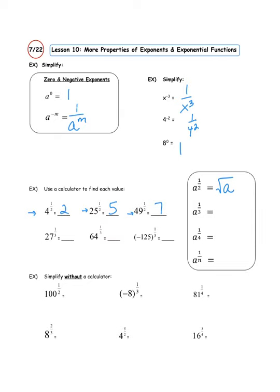What about a one-third power? Let's try those. If you haven't already done so, hit the pause button and type those in. 27 to the one-third power ends up to be 3. 64 to the one-third power ends up to be 4. And negative 125 to the one-third power ends up to be negative 5.